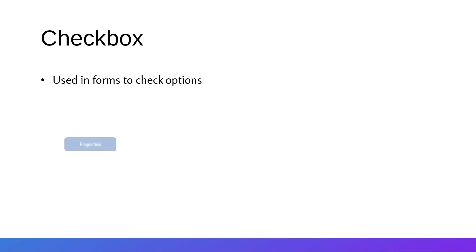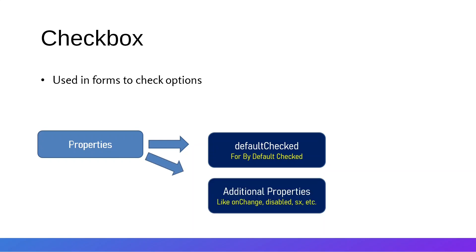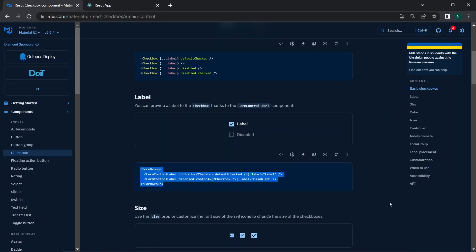Checkboxes are used inside forms to allow selecting multiple options. They let users select one or more options from a limited number of choices. The defaultChecked property is used for the initial checked state, which enables the checkbox on initial render. Additional properties include onChange, disabled, and sx for styling.